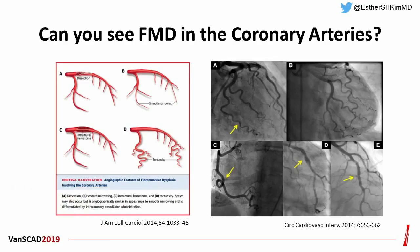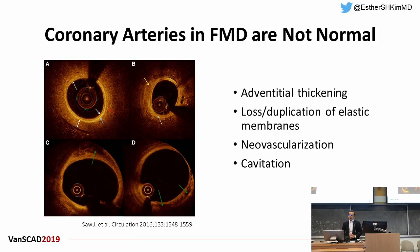In patients with FMD, we can see very unique features in coronary artery disease, including dissection, tortuosity, smooth narrowing, and irregularity. This is the representative image of coronary findings showing tortuosity, smooth narrowing, and irregularity. From the OCT image, we can understand the unique histopathologic features in patients with FMD, including adventitial signaling, duplication and loss of the elastic membrane, and neovascularization and cavitation.